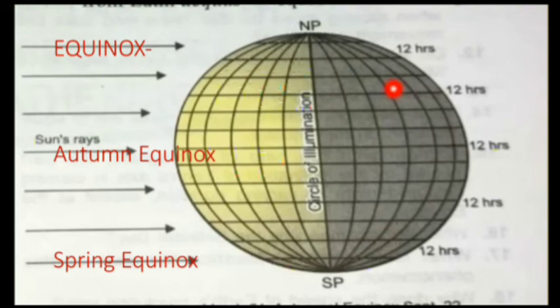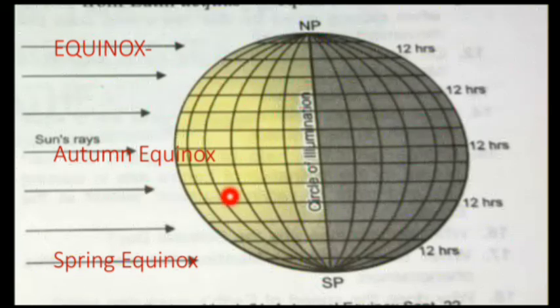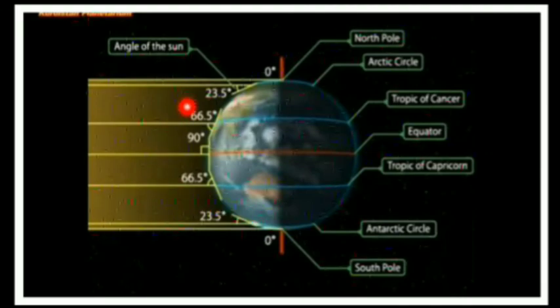During equinox, you can see the circle of illumination passes from North Pole to South Pole. According to autumn and spring equinox, the seasons are vice versa in the northern and southern hemispheres — when the northern hemisphere has autumn, the southern hemisphere has spring, and vice versa. During equinox, all places from North Pole to South Pole experience the same amount of heat and 12 hours of day and 12 hours of night. This happens twice a year: on 21st March and 23rd September.